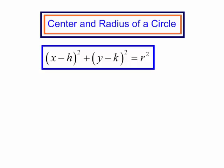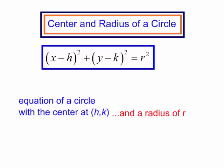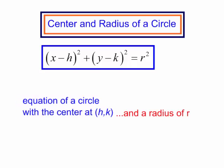x minus h in parentheses squared plus y minus k in parentheses squared is equal to the radius squared. This is the equation of a circle with the center at (h,k) and a radius of r.